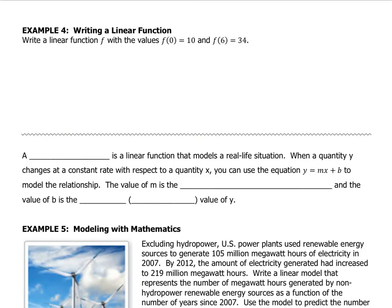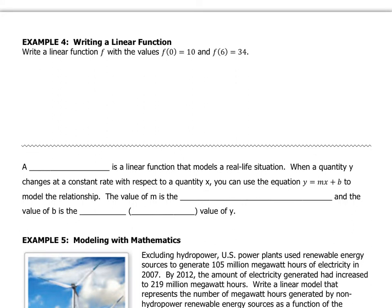Now this is just another way of writing the points. So remember, in function notation, you have f of x equals y. So instead of x, they put a 0. Instead of y, they put a 10. So that's just the point 0, 10. Which means that this is the point 6, 34. So it's just a more advanced way of writing x comma y.